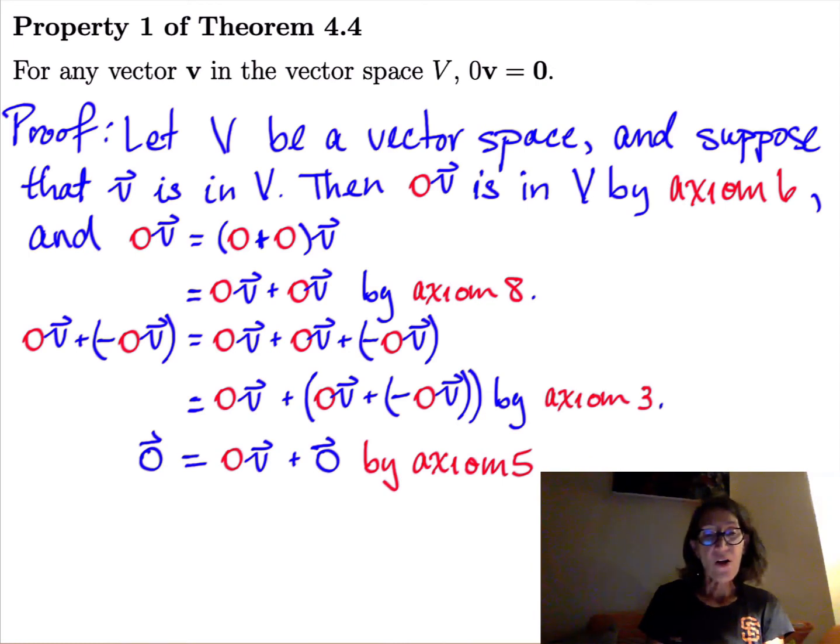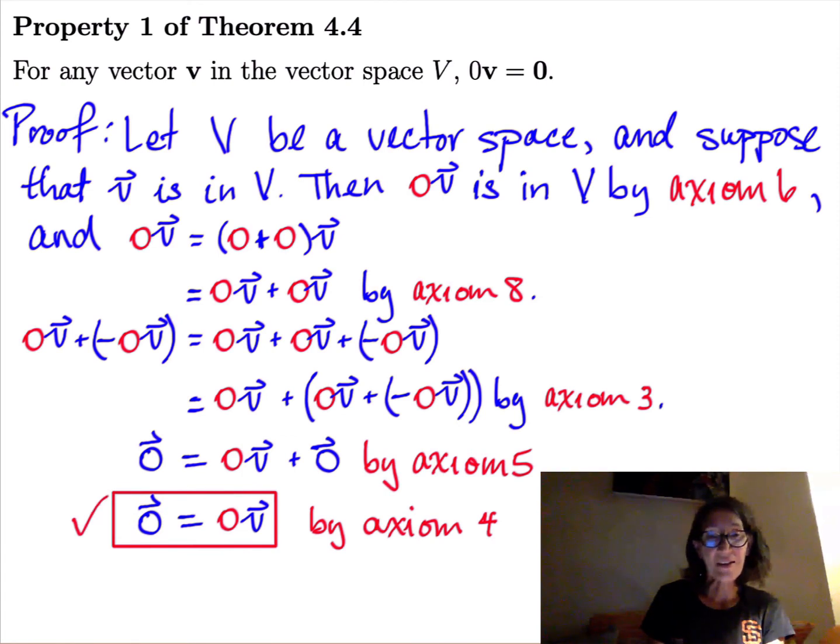So now, on the right side, I have a vector 0 times v plus the additive identity vector, and so that just means I have 0 times v on the right side. So I've just proven that that's axiom 4. I've just proven that the additive identity vector is, in fact, 0 times this arbitrary vector v.